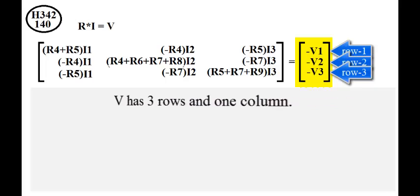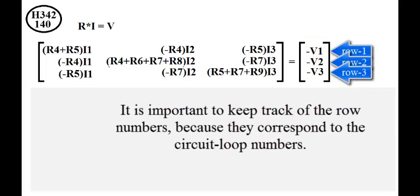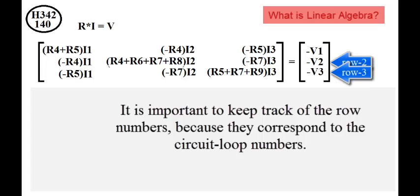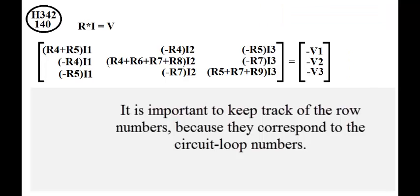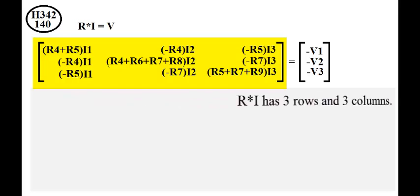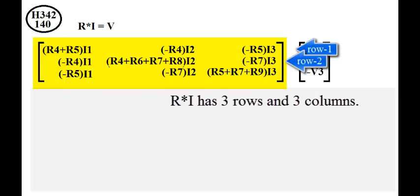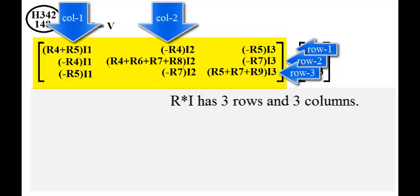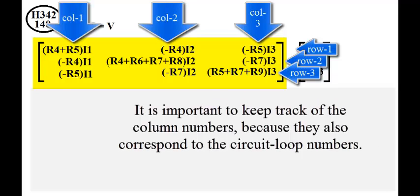It's important to keep track of row numbers because they correspond to circuit loop numbers. R times I is a 3 by 3 matrix. R times I has 3 rows and 3 columns. It's important to keep track of column numbers because they also correspond to circuit loop numbers.